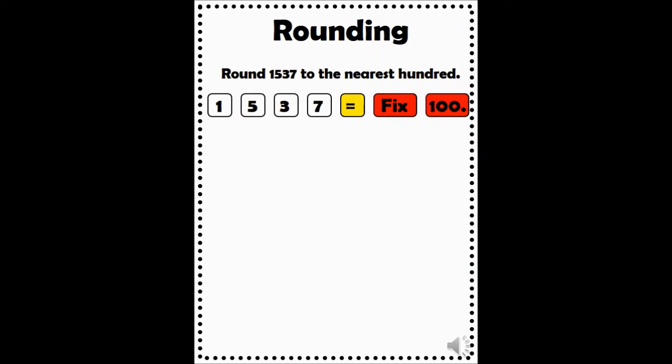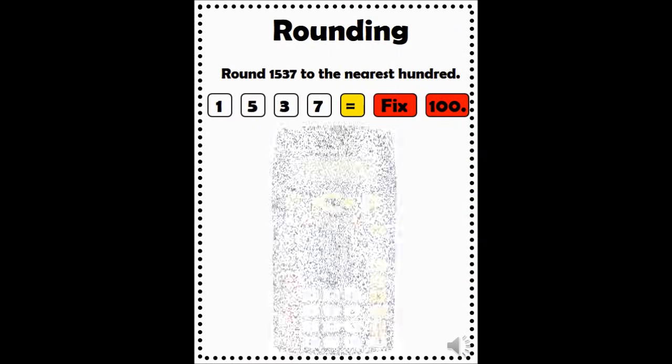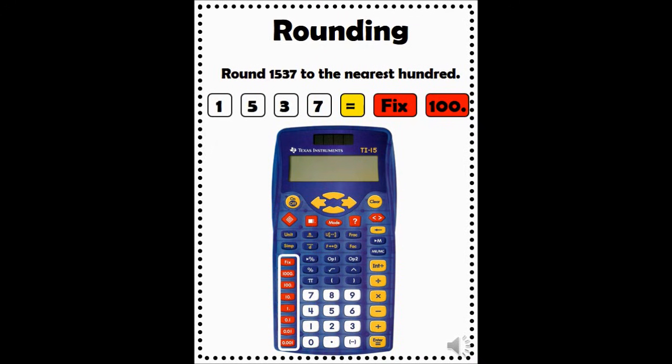Let's take a look at the rounding function. For rounding numbers, you will use the red buttons on the left of your calculator. Since there is not a rounding button, we will instead use the button labeled fix. For example, if you wanted to round to the nearest hundred, you would press fix and then the red 100 key. Let's round the number 1537 to the nearest hundred. Enter 1537, then press the equal or enter button at the bottom right of your calculator. This moves the number to the right side of your display. Then press fix and the red 100 button.